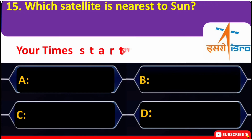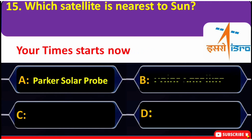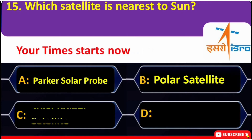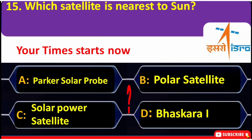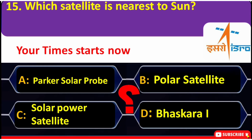Which satellite is nearest to the Earth? A. Parker Solar Probe, B. Polar Satellite, C. Solar Power Satellite, D. Bhaskara 1.